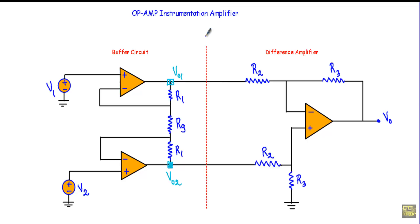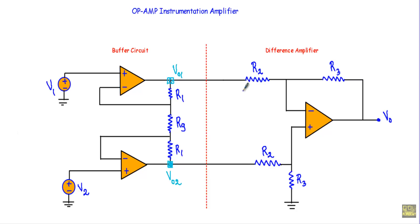We can divide this op-amp instrumentation amplifier into two segments: this is the difference amplifier segment, and this is the buffer circuit segment. Now let me show you the derivation of this operational amplifier instrumentation amplifier. Our circuit can be divided into two portions: the buffer circuit unit and the difference amplifier unit. The voltage at this point is V01, and that will be applied at one end of R2, and the voltage at this end is V02.